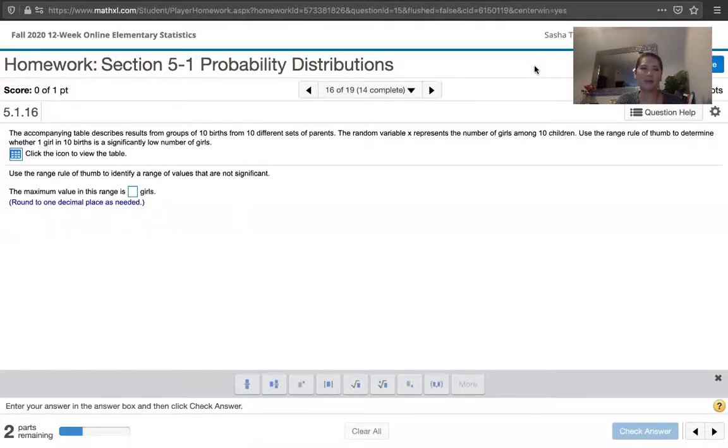In this video we solve problem 5.1.16 from Essentials of Statistics 6th edition by Mario Triola. The problem statement says the accompanying table describes results from groups of 10 births from 10 different sets of parents. The random variable x represents the number of girls among 10 children. Use the range rule of thumb to determine whether one girl in 10 births is a significantly low number of girls.